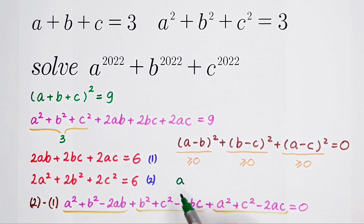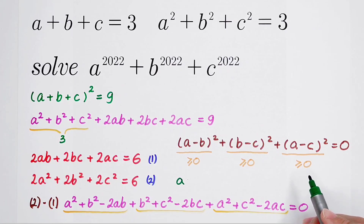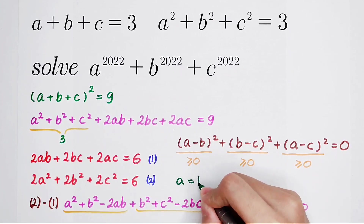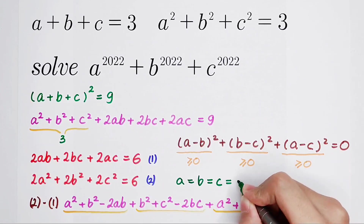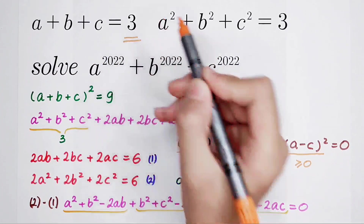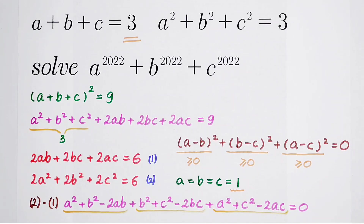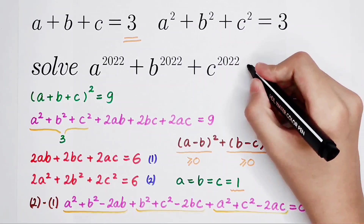So A minus B equals B minus C equals A minus C, and they are all equal to 0. Therefore, A equals B equals C. Since A plus B plus C equals 3, they are all equal to 1. Now I know the values of A, B, and C, so the final answer — A to the power 2022 plus B to the power 2022 plus C to the power 2022 — is 1 plus 1 plus 1, which equals 3.